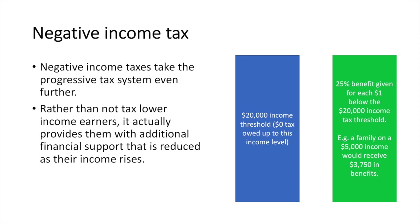Under a negative tax rate system, the marginal tax rates still apply, but the only thing that changes applies to lower income earners. The lower you are from the $20,000 income threshold, the more support you receive from the government.